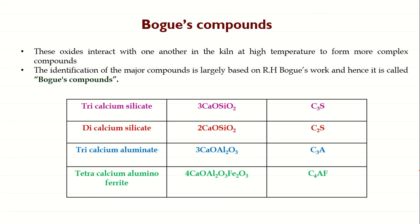The Bogue compounds are listed in a tabular column: we have tricalcium silicate, dicalcium silicate, tricalcium aluminate, and tetracalcium aluminoferrite. Tricalcium silicate is denoted by C3S, dicalcium silicate by C2S, tricalcium aluminate by C3A, and tetracalcium aluminoferrite by C4AF.